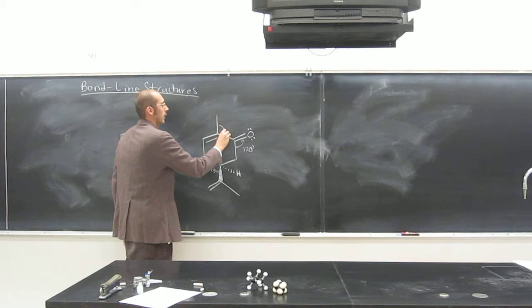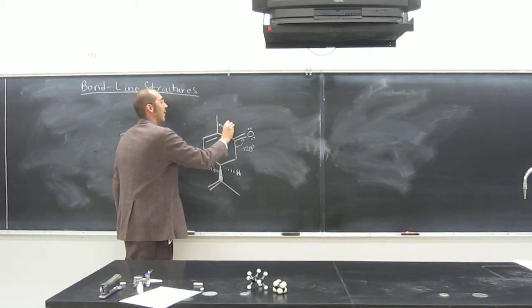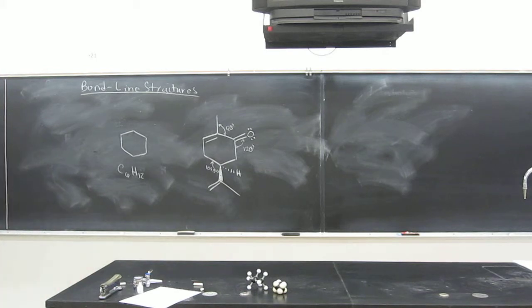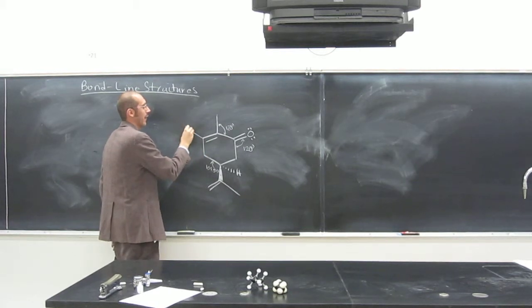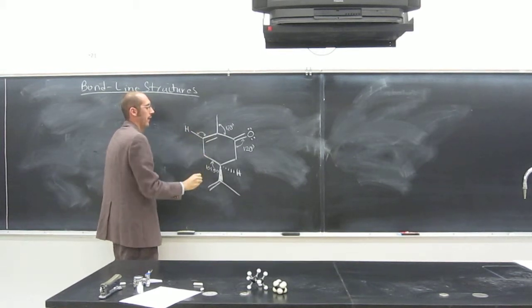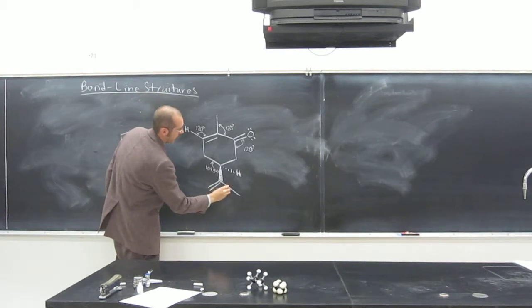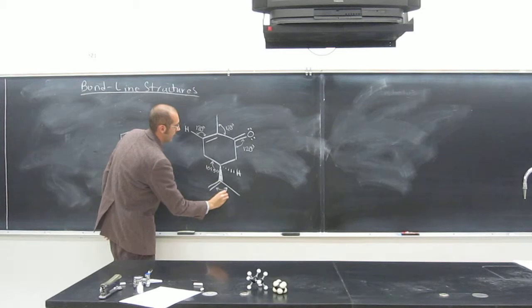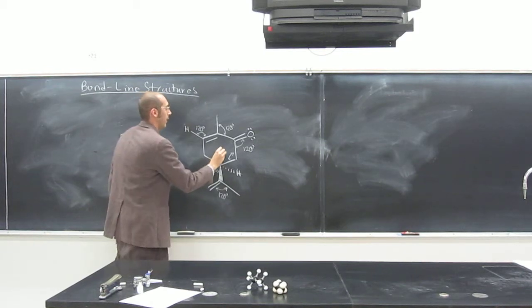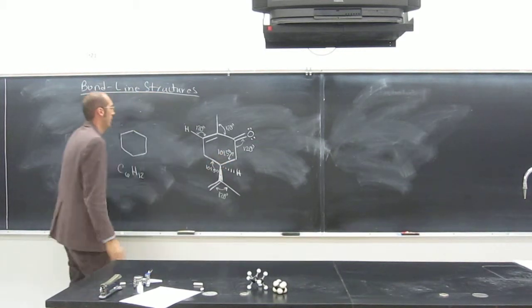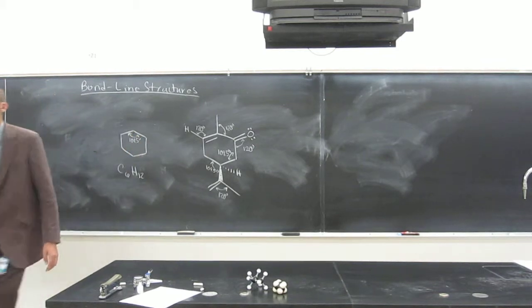What about this bond angle here? Would it be 120? 120 as well. And then this, what about, so there's a hydrogen there, right? What about the bond angle there? 120. What about this bond angle here? 120. What about this bond angle here? 109.5. What about this bond angle? 109.5. All of those bond angles.